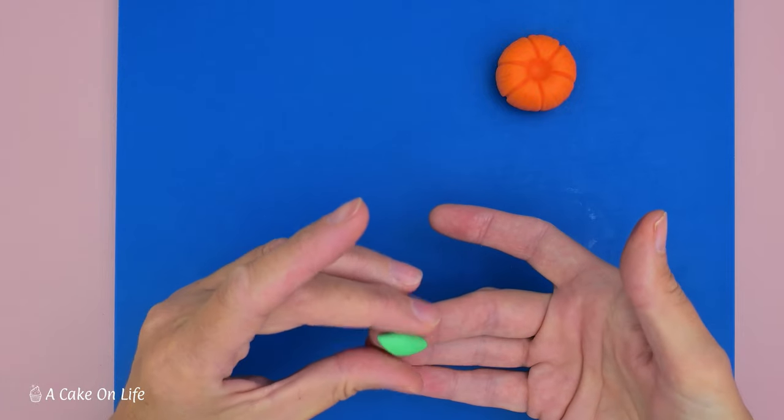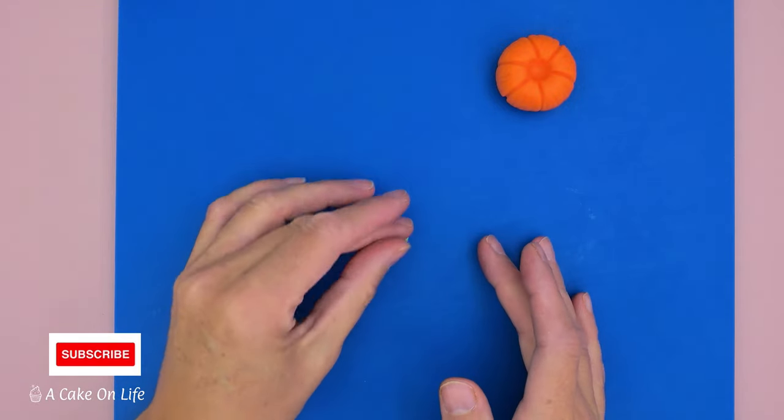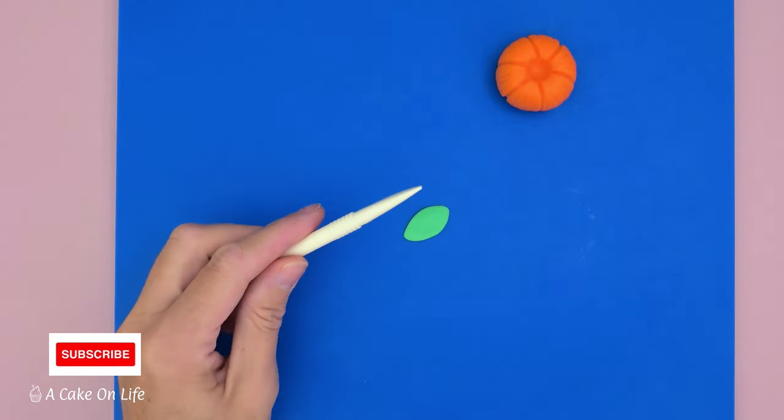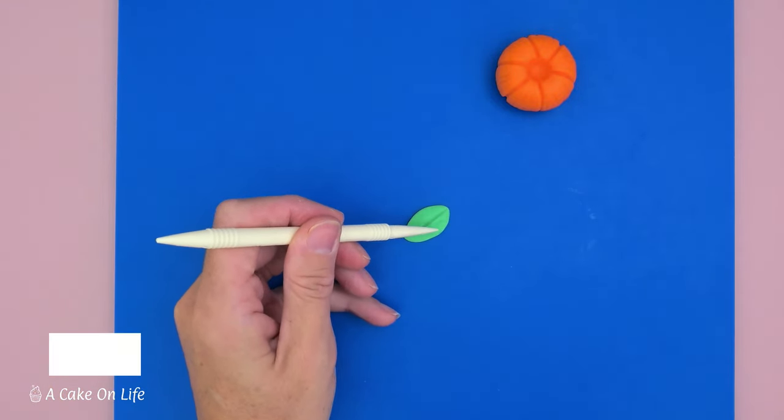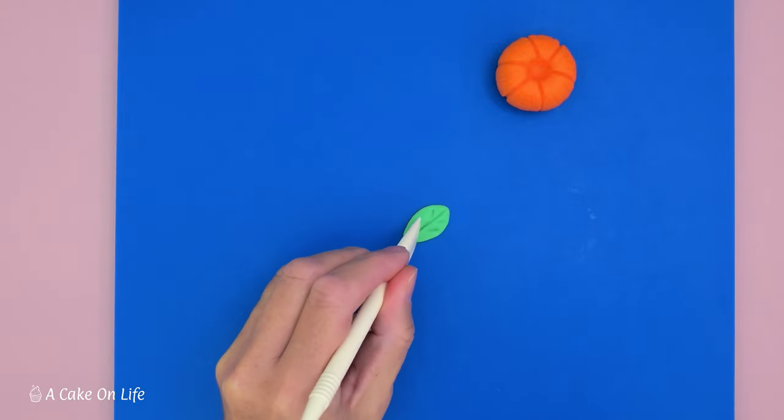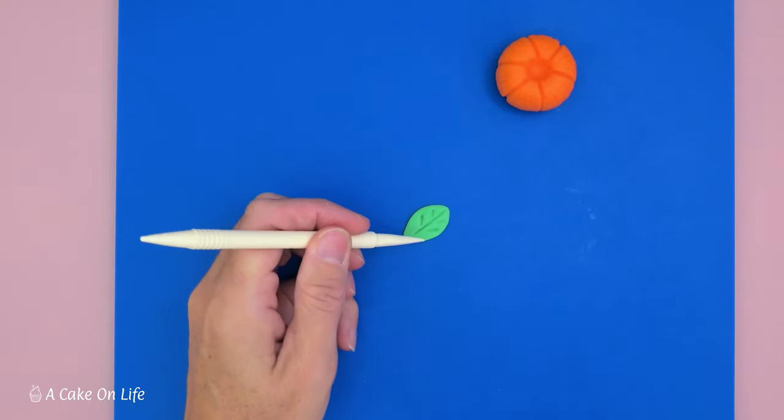So there we go, there's our flat diamond shape. And then I'm just going to grab my knife tool, I'm just going to score a line down the middle and then a few lines diagonally either side. We're creating the veins of the leaf.